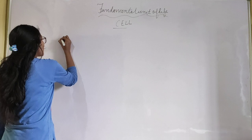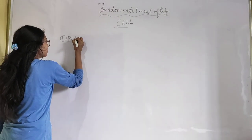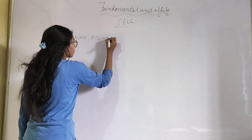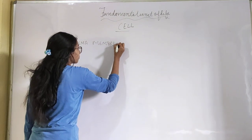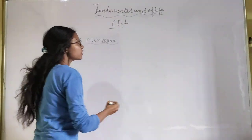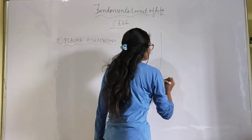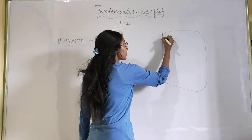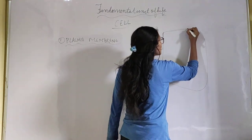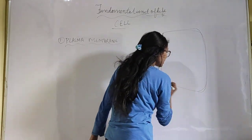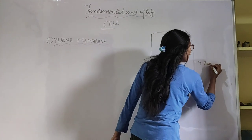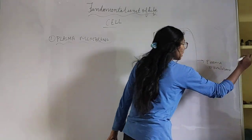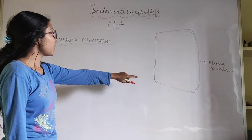First is the plasma membrane. The outer part of any cell — whether it is a plant cell or an animal cell — is known as the plasma membrane.